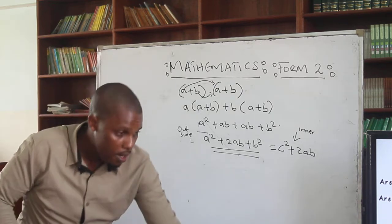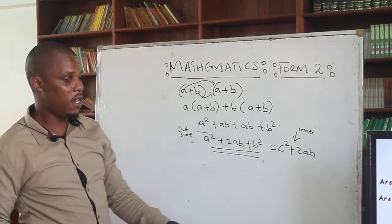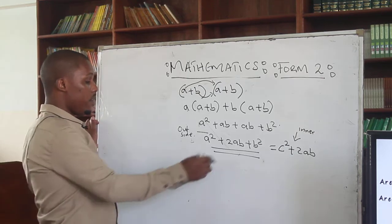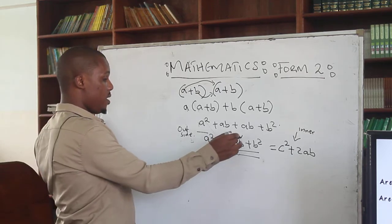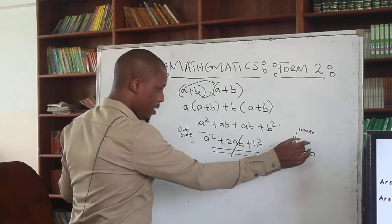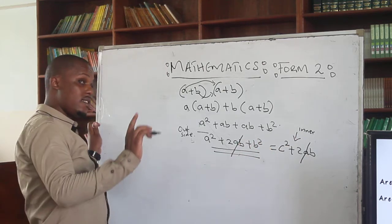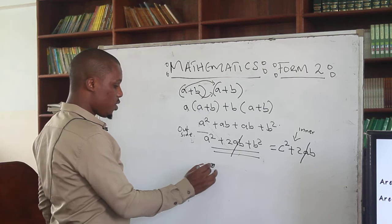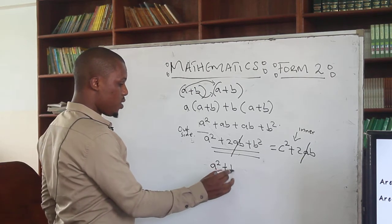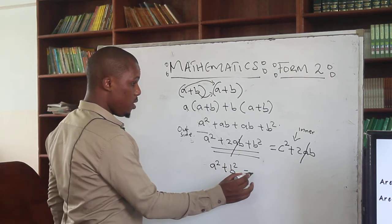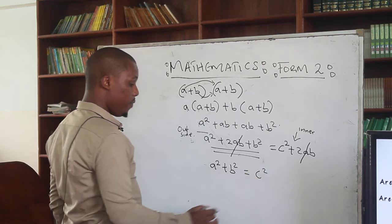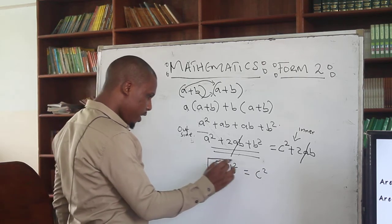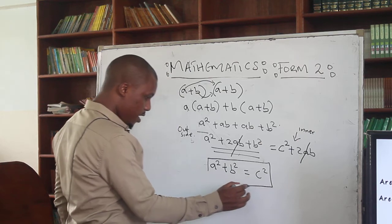This 2AB appears on both sides, so you cancel it out. When you cancel out, at the end of the day — just like we said in the case of the study — this is going to give us A squared plus B squared is equal to C squared. In this case, this is what we are referring to as the Pythagoras theorem.